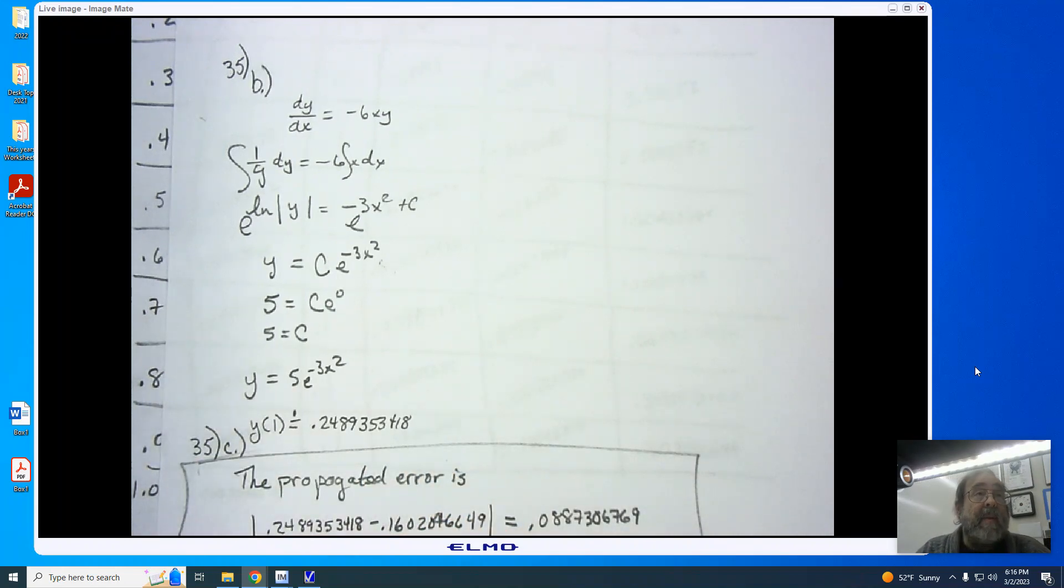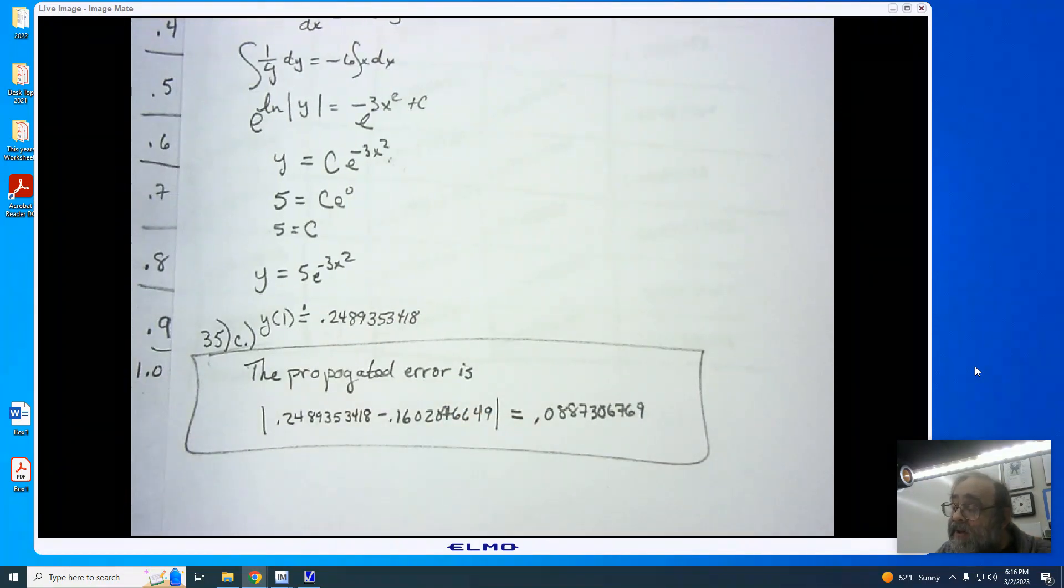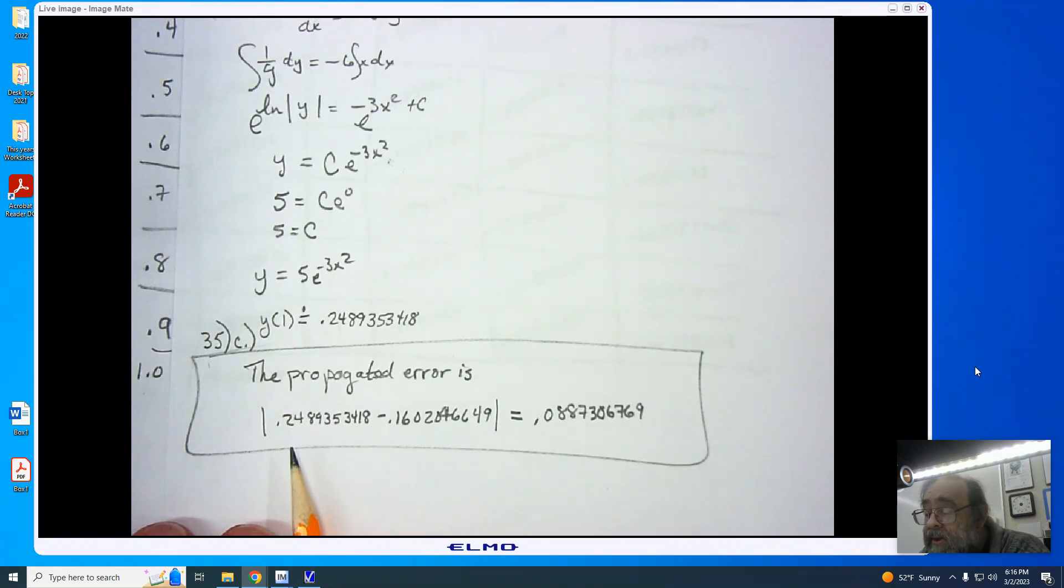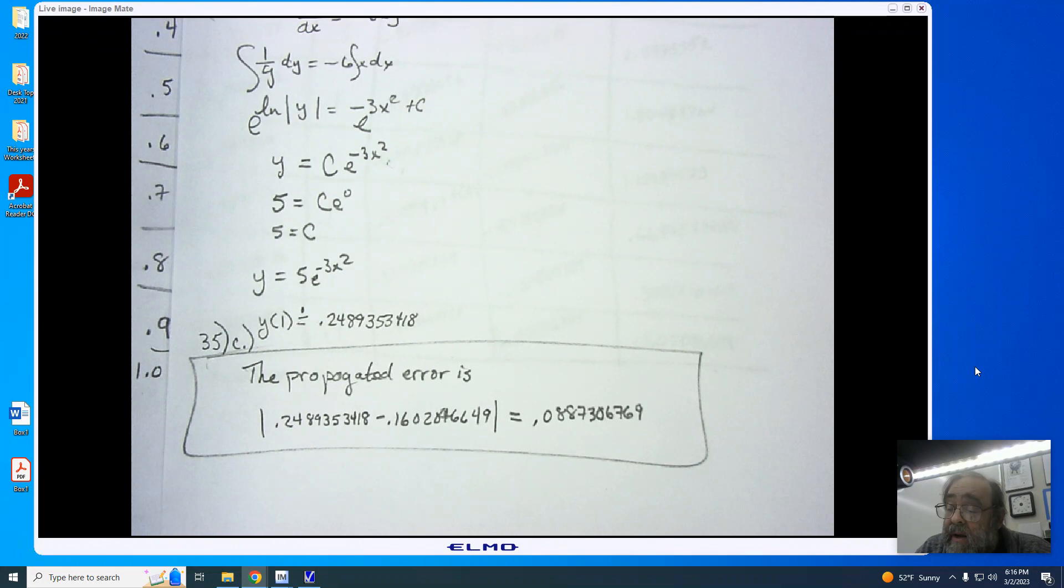Now, part c is asking us to find the propagated error. To find the propagated error, we take the absolute value of the difference between the two. It does not matter which is first and which is second because of the absolute value. The propagated error will always be a positive value under these conditions. We will see this again in our Calculus BC next year. To find our propagated error, I am now taking the absolute value of 0.2489353418 minus 0.1602046649, and I arrive at the answer for part c of 0.0887306769. And that's what we're looking for in number 35.